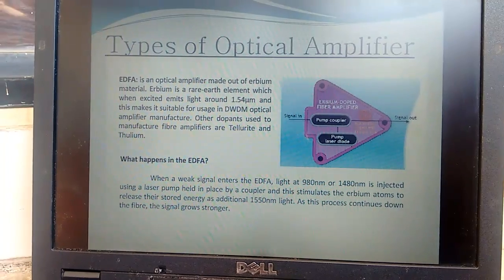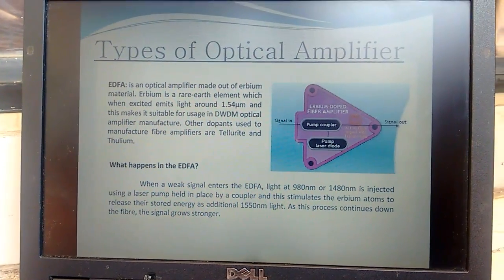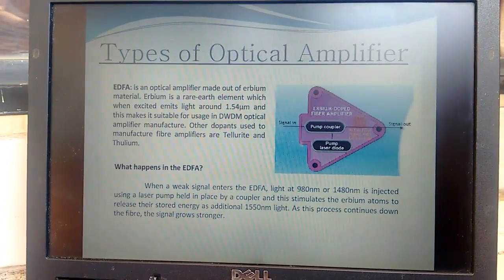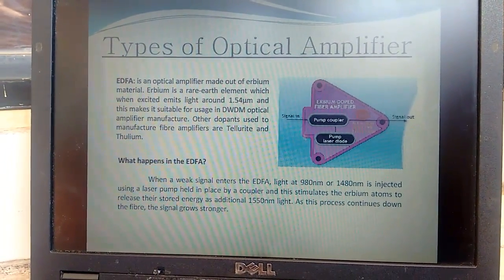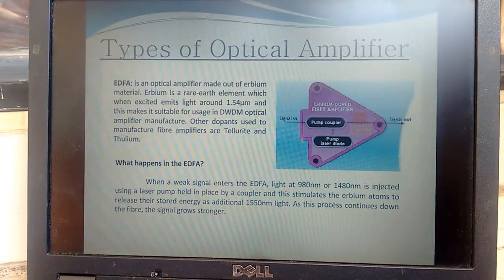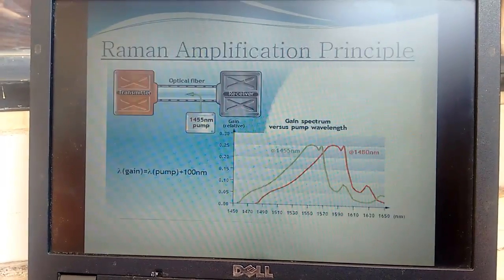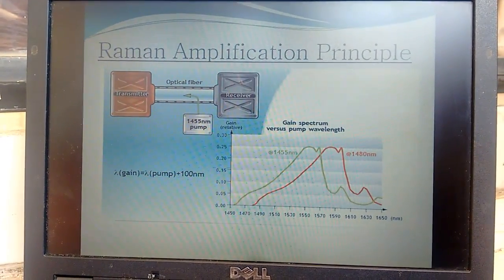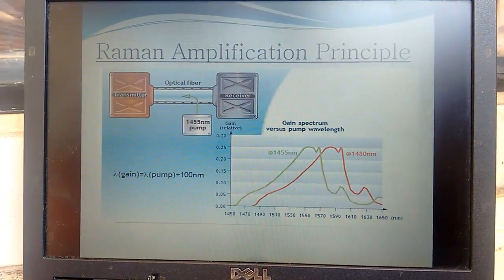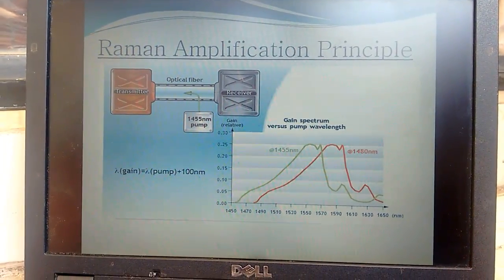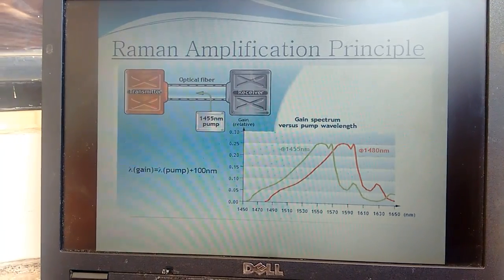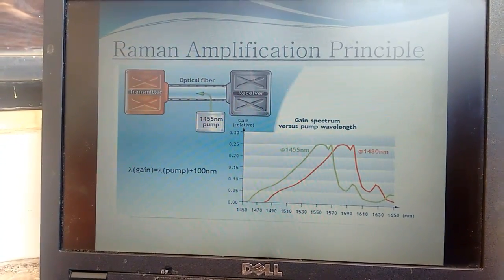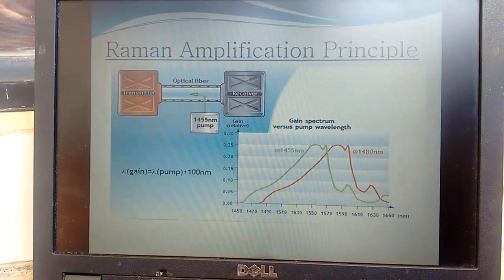For optical amplifiers, we use the EDFA type — Erbium Doped Fiber Amplifier. There is also the Raman amplifier, which we use for long-haul applications with heavy losses in fiber; however, it is very expensive and not commonly used.